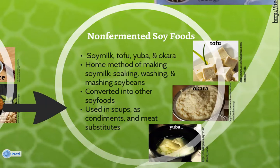Examples of traditional non-fermented soy foods are soy milk, tofu, yuba, and okara. The traditional home method of making soy milk involves the techniques of soaking, washing, and then mashing the soybeans into a liquid paste that is then filtered through a cloth. Water is added and the soy milk is ready. Once you have soy milk, it can be converted into a variety of other soy products. If you add a thickener, it will become tofu.